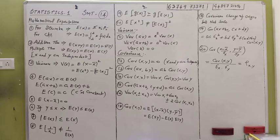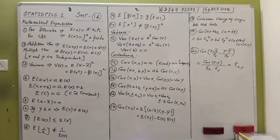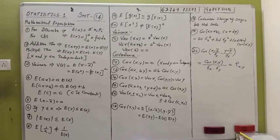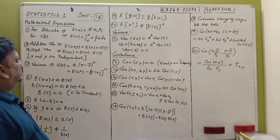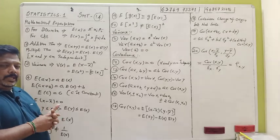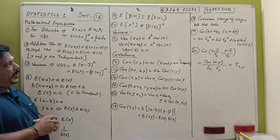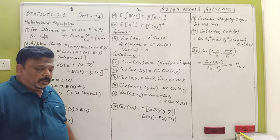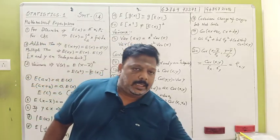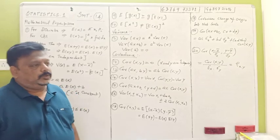We are going to talk about variance and covariance. This is the importance of formulas. We are going to talk about conditional probability, mathematical expectation, and covariance. This is the important formula. I'm going to talk about classical mathematical expectation.